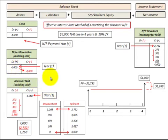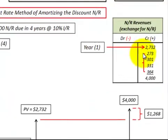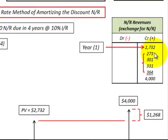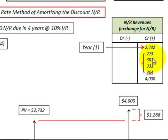That takes care of year one — everything balances. Now in the following years, we have to recognize our interest revenue on that notes receivable. In this case, I used the effective interest rate method to determine it. So here we have our interest revenue and then the present value that we recorded at the beginning of year one.